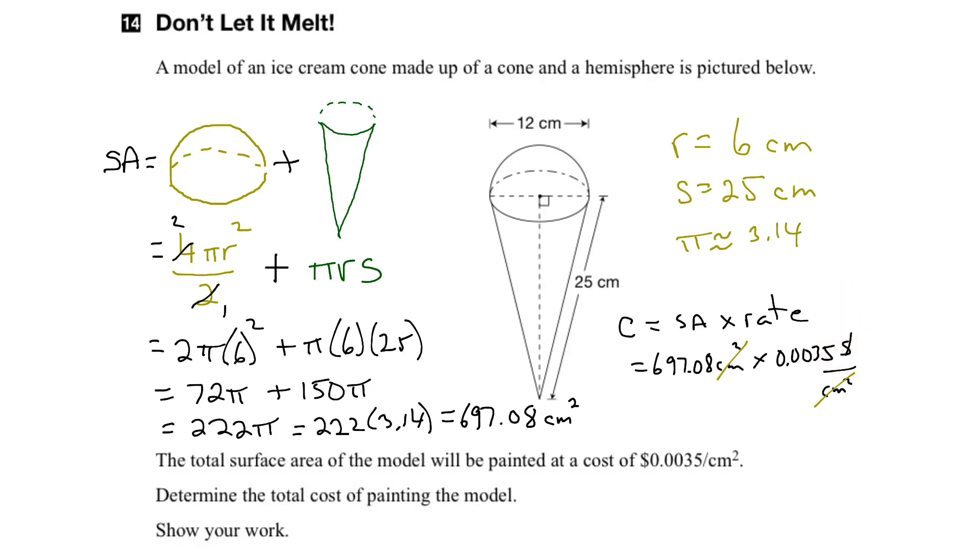And the units can really help us out, because if we weren't sure about this equation here, all we have to do is look at the units and say, well, what would I have to do to this value and this value in order to get these centimeters squared to cancel out and leave me with the dollars? Well, the way we do that is to multiply the two.